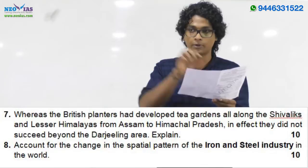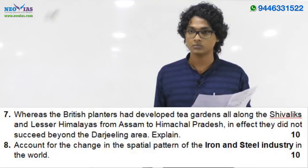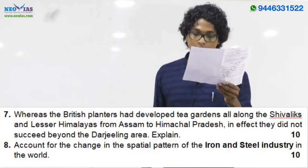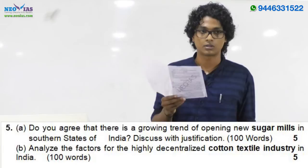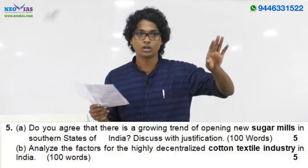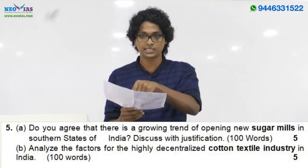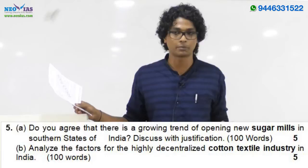The 2014 seventh question was completely new and not in the optional paper, but the eighth question was: 'Account for the change in spatial pattern of iron and steel industry in the world.' Similarly, the 2013 fifth question covered sugar mills and cotton textile industries. Questions from the industries part are fewer, but we cannot rule out that they won't ask from it, so we should prepare around seven selected topics — industries already asked plus those from the geography optional paper.